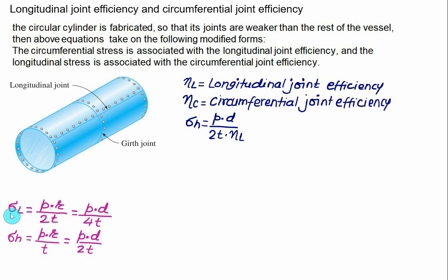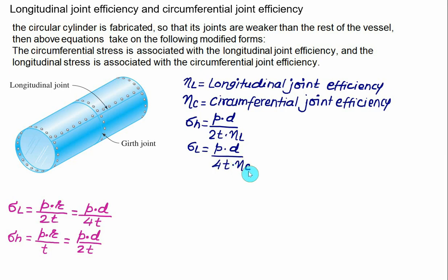The longitudinal stress is associated with the circumferential joint. Whenever longitudinal joint efficiency and circumferential joint efficiency are given, you modify both the hoop stress and longitudinal stress equations. The longitudinal stress is modified as P times internal diameter D divided by four times wall thickness, further divided by the circumferential efficiency. The circumferential joint efficiency refers to the strength of a weld that runs around the circumference of a pipe or cylinder, expressed as the ratio of weld strength to base metal strength.